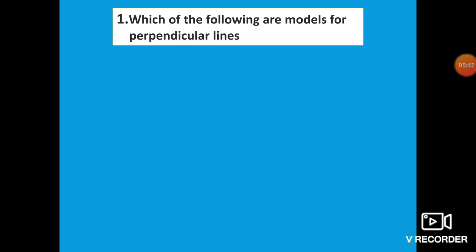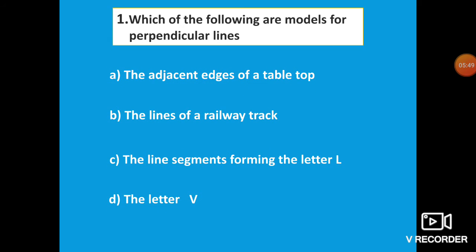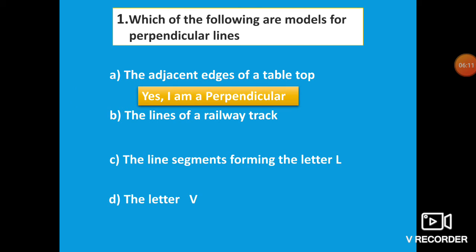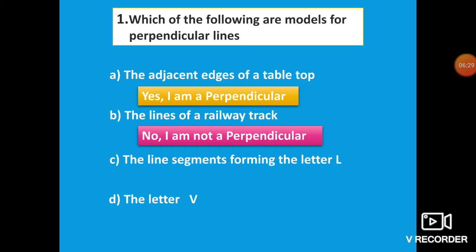Here is a question: which of the following are models for perpendicular lines? First: adjacent edges of a table top. If the table is rectangle or square shaped, then the adjacent edges of a table top are clearly perpendicular — yes, it is perpendicular. Next: lines of a railway track. We already studied railway track is an example of parallel lines, so it is not perpendicular — no, it is not perpendicular.